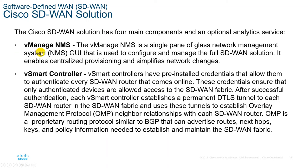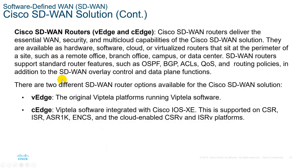There are two different SD-WAN router options: the vEdge, which is the original Viptela platform running Viptela software, and the cEdge, which is the Viptela software integrated with Cisco IOS. After Cisco acquired Viptela, the Cisco IOS-integrated router was called cEdge. A main differentiator between the cEdge and vEdge router is that the cEdge supports advanced security features, as Cisco added these capabilities after the acquisition.